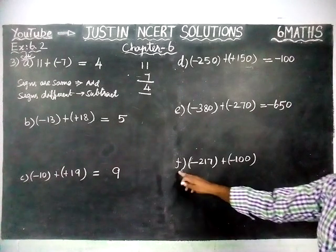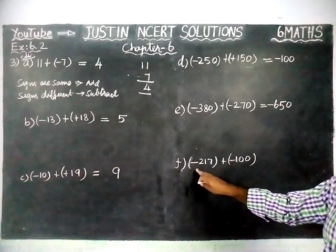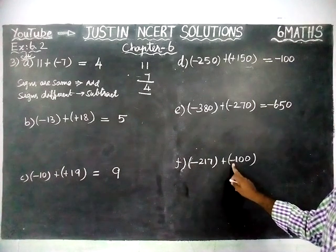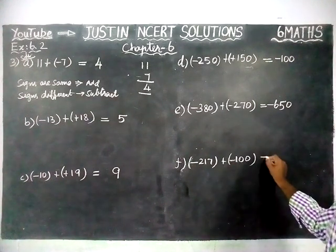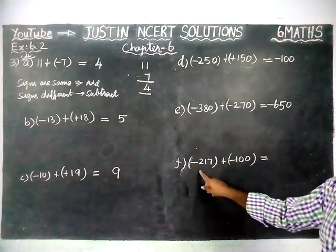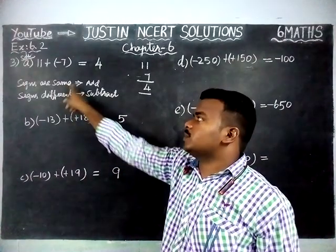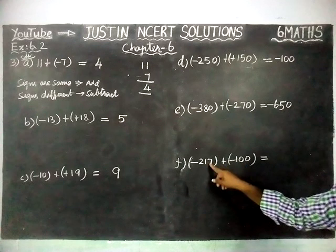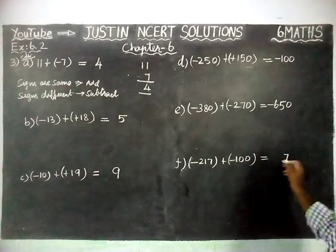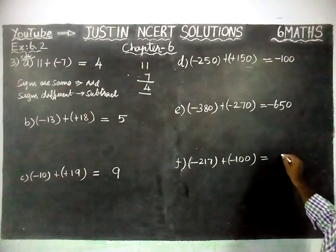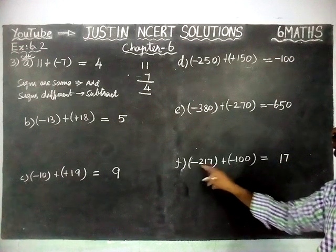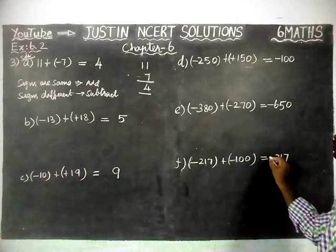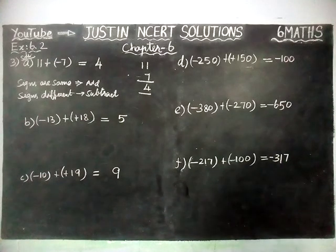Next, part F: minus 217 plus minus 100. Both have the same sign — minus — so we are going to add. 0 plus 7 is 7; 0 plus 1 is 1; 1 plus 2 is 3. Both also have the same sign, so minus 317 is the answer.